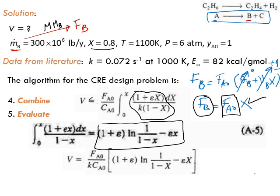k needs to be evaluated at 1100 Kelvin, but we only have k at 1000 Kelvin. No problem — we use the Arrhenius equation: k2 at 1100 K equals k1 at 1000 K times e to the power of minus (Ea/R) times (1/T2 − 1/T1), where T2 is 1100 K and T1 is 1000 K. This gives us the value of k.